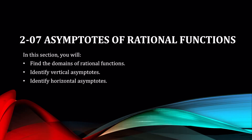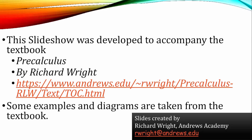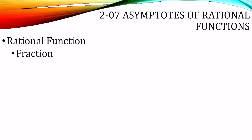Lesson 2-7: Asymptotes of Rational Functions. A rational function is a function that's written as a fraction, with x in the denominator.